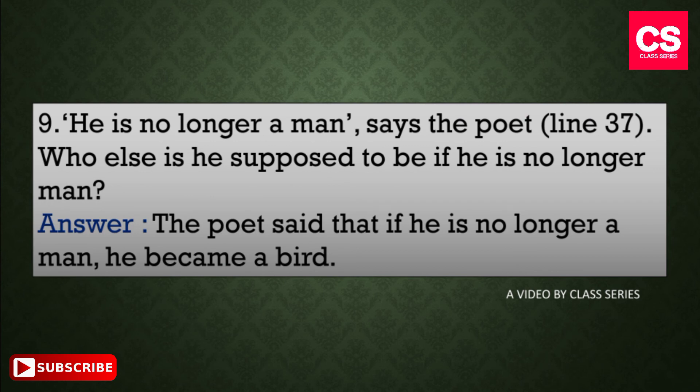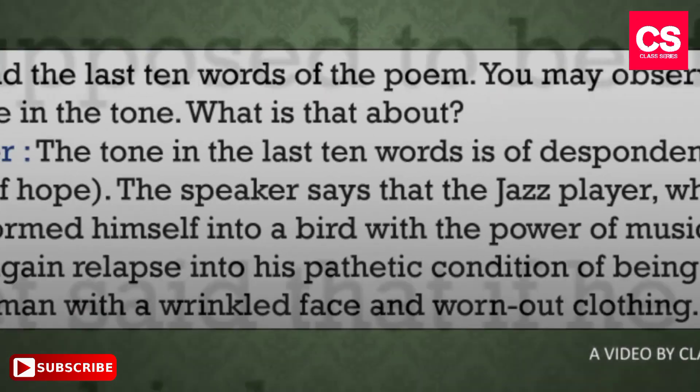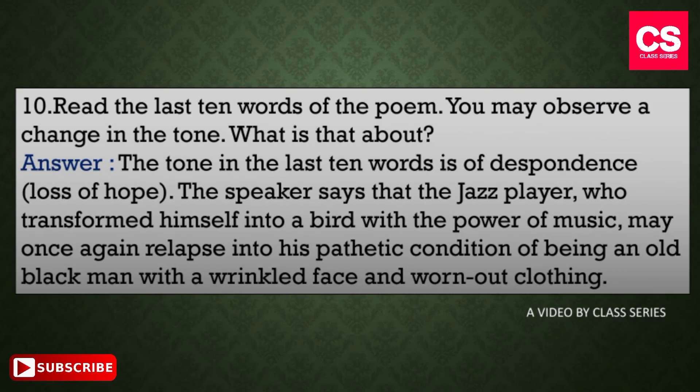Our ninth question is: the poet says 'he is no longer a man' in line 37 — who is he supposed to be if he is no longer a man? The answer: the poet said that if he is no longer a man, he became a bird.